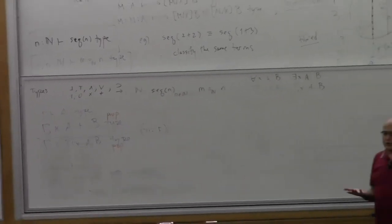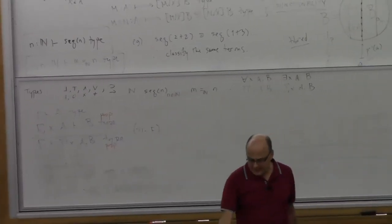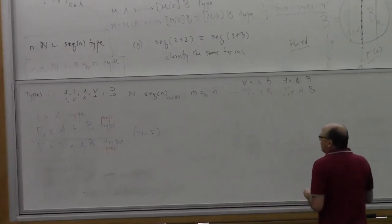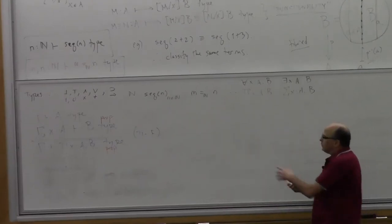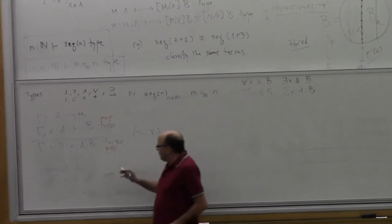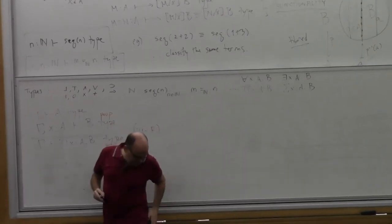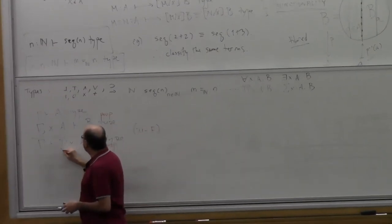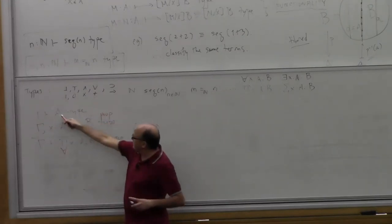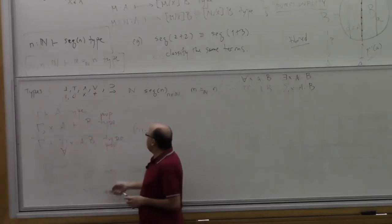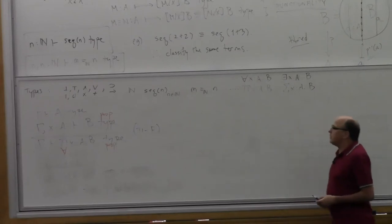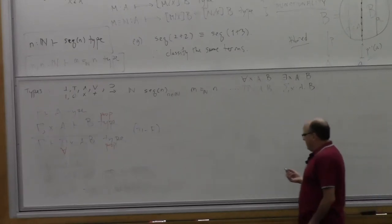Type theory was the first comprehensive understanding of logic, in my opinion. If it were a logic book, you would tend to distinguish that A is a type and B is a proposition, and write this as a for-all. So that's a special case of the general thing.